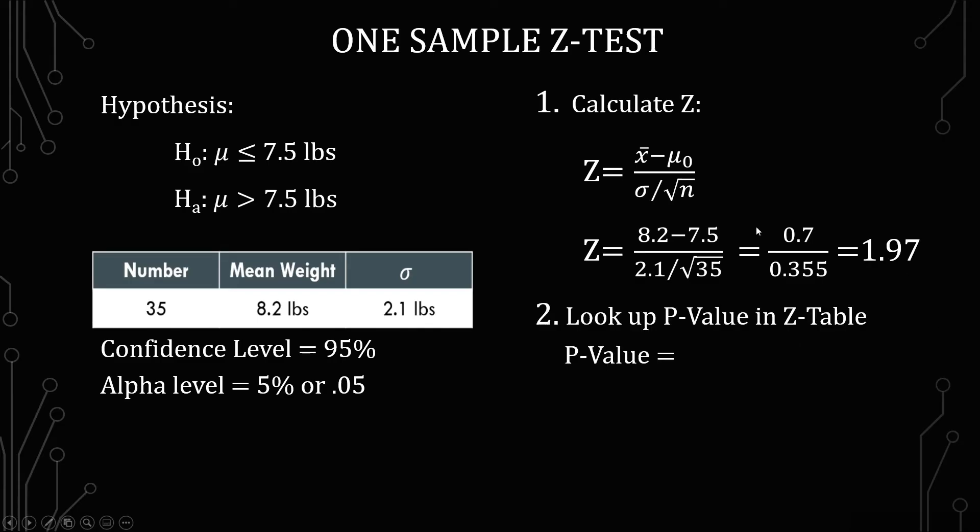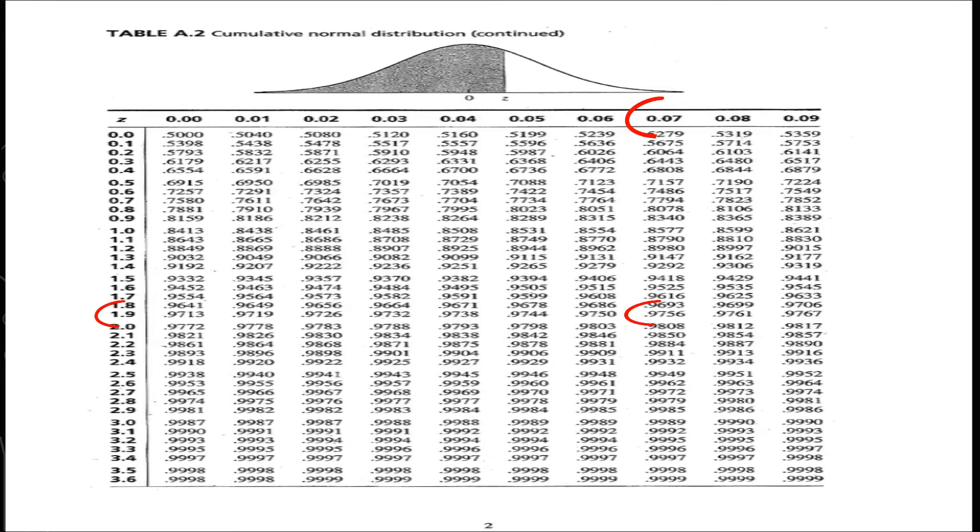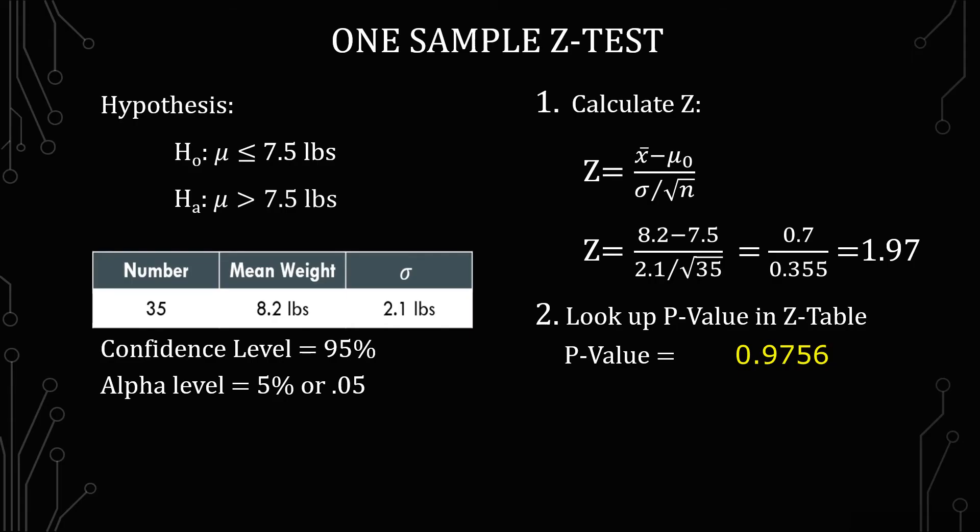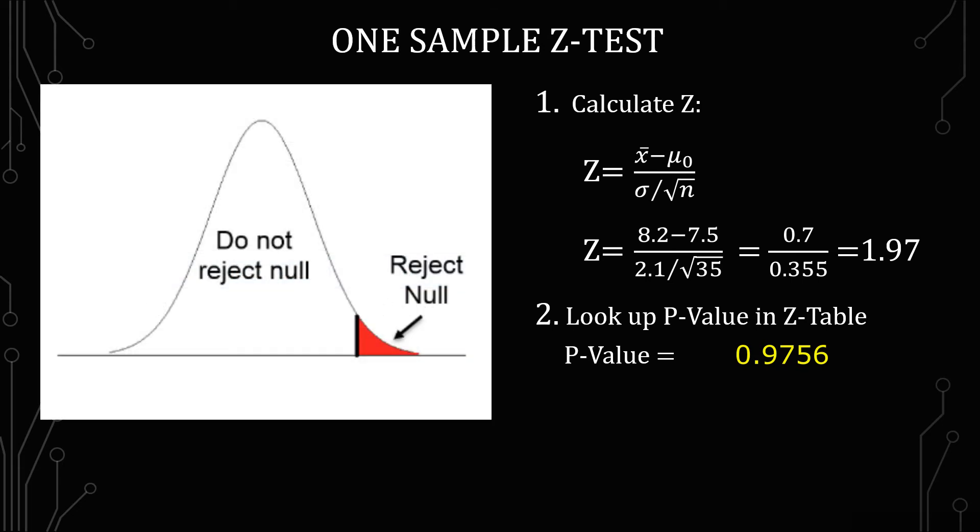The next thing we have to do now is look up the p-value in the z-table. Because we want to see if the p-value is greater than, we have to look at everything to the right of the value.